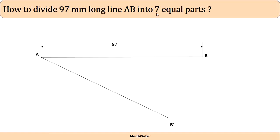Another higher option is 105 millimeters, which can also be divided into seven equal parts — each division will be 15 millimeters. So I have selected 105 millimeters as the auxiliary line length AB dash. Divide AB dash into seven equal parts of 15 millimeters each.